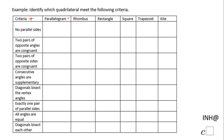The first shape is the parallelogram. Let's look at the first column for the parallelogram and see which of these criteria work. 'No parallel sides' — that is wrong, a parallelogram has two pairs of opposite sides parallel. 'Two pairs of opposite angles are congruent' — that is a good property for a parallelogram.